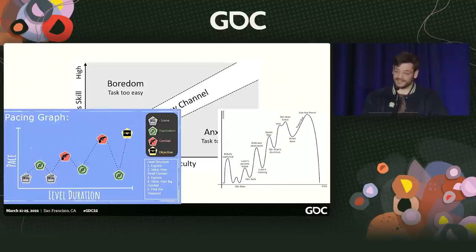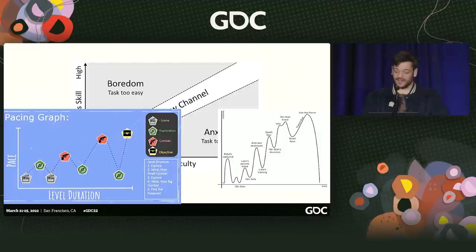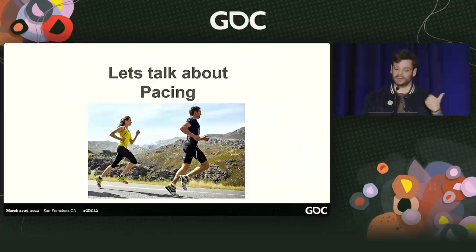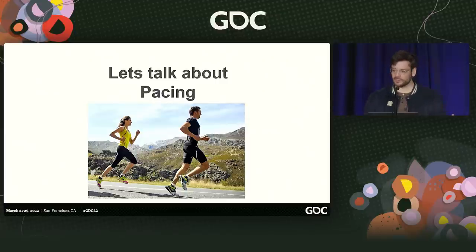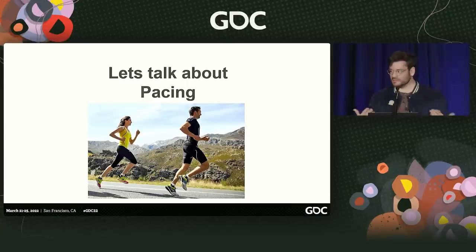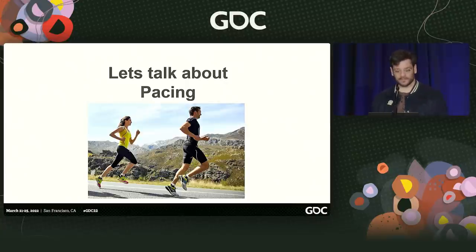We don't need those graphs. We don't need any of this at all. Instead, the way I'm going to approach this talk is that we're going to treat pacing like running. As the person going through a story, you're the one setting the rhythm, the tempo, the actual speed that the story happens. We try to give that to the player in Last of Us Part II.